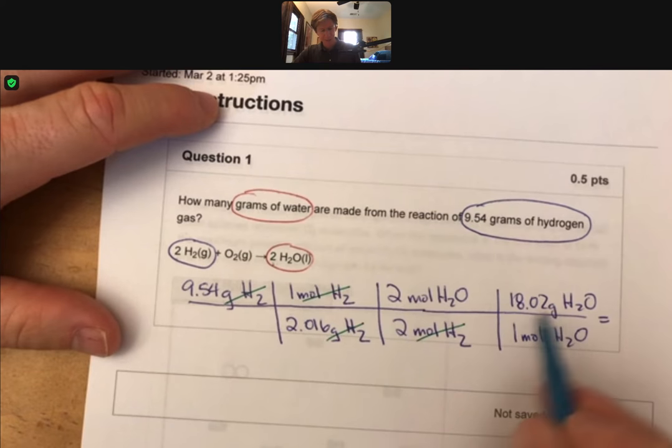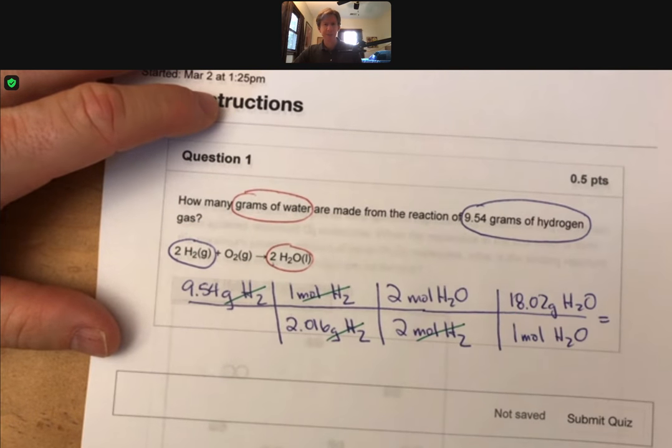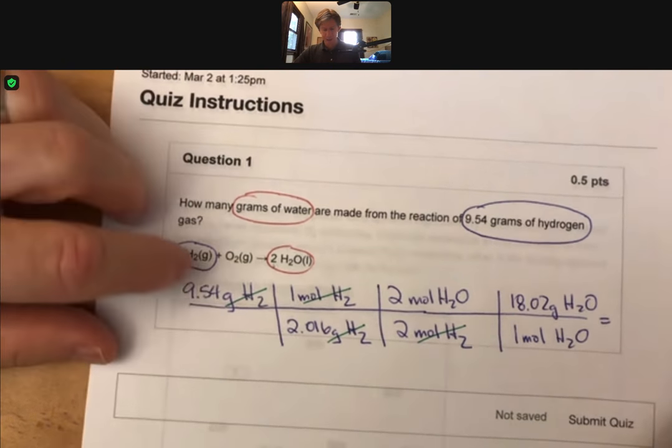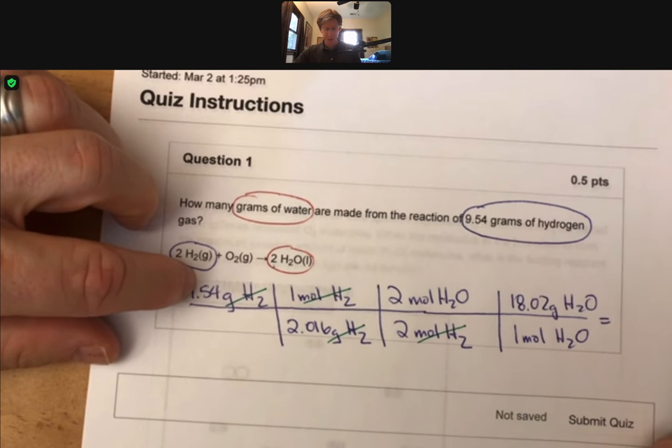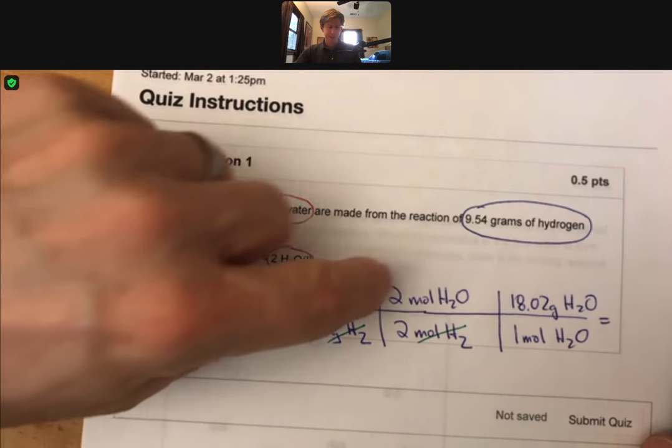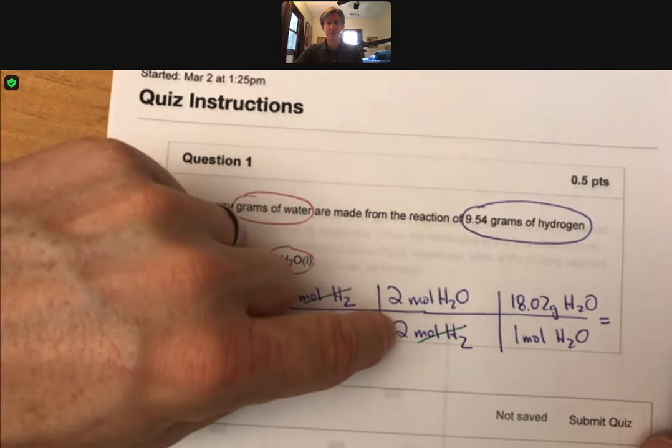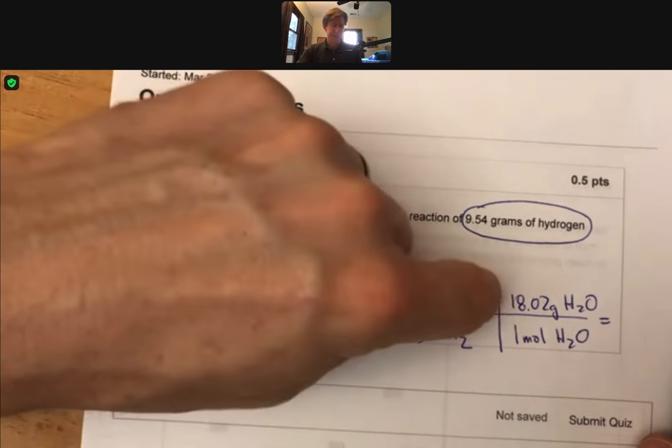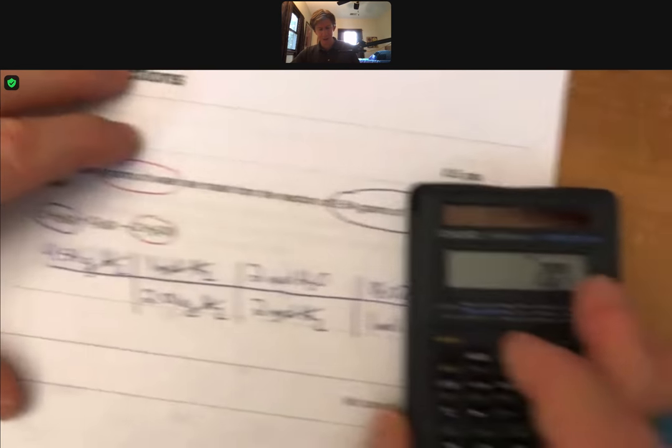Multiply the numbers across the top. Divide by the numbers on the bottom. I think I've said this before, but I like to go 9.54 divided by 2.016 times 2 divided by 2. Those two cancel out. Times 18.02. So let's go ahead and do it.